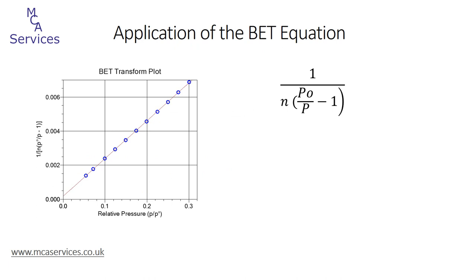In practice, we generate the BET transform plot from the isotherm data by plotting relative adsorption pressure against the BET function. This is shown in the plot on the left side. Isotherm data points in the range 0.05 to 0.3 relative pressure have been used, and a linear regression line drawn through them. The slope s and the intercept i of the linear regression line derive nm and the BET c value.